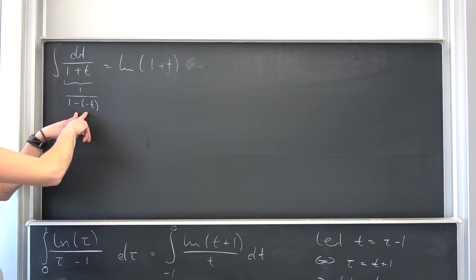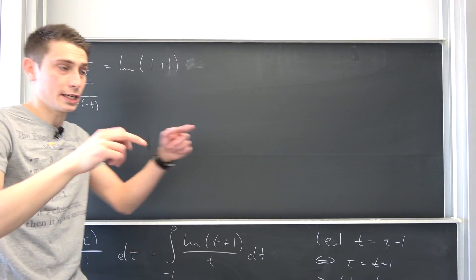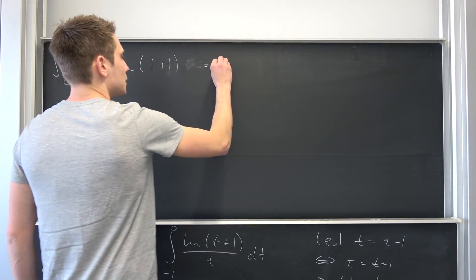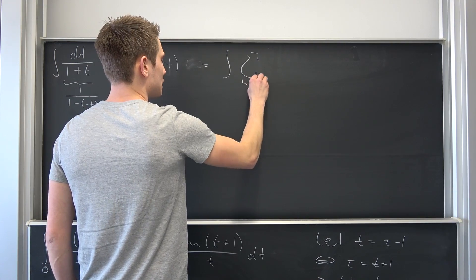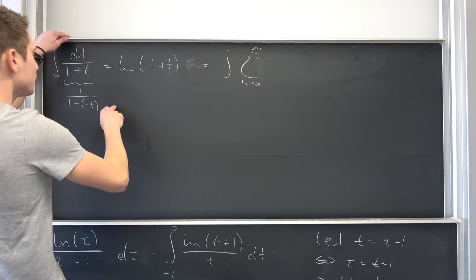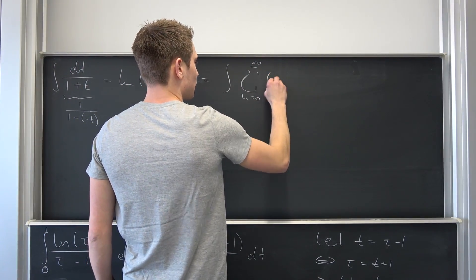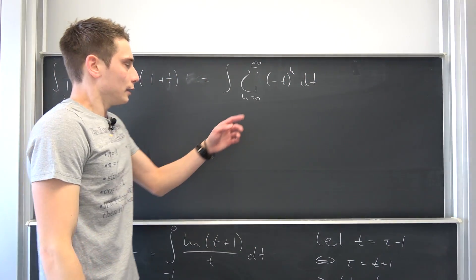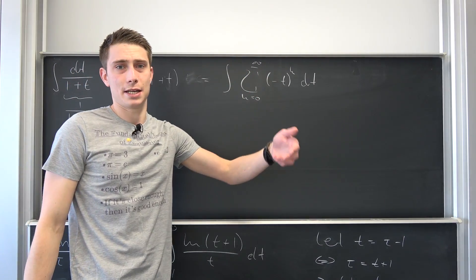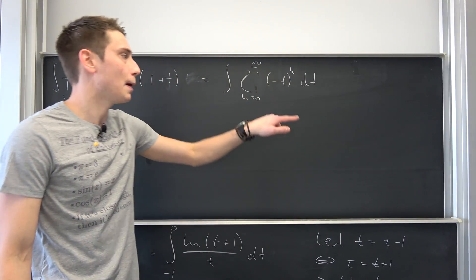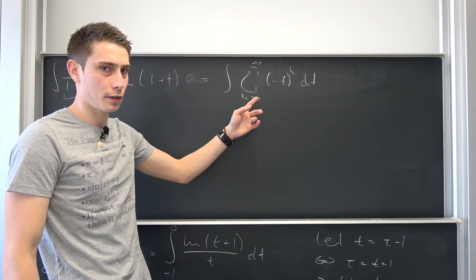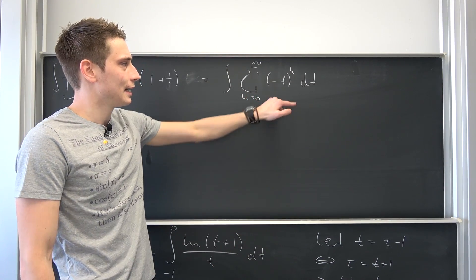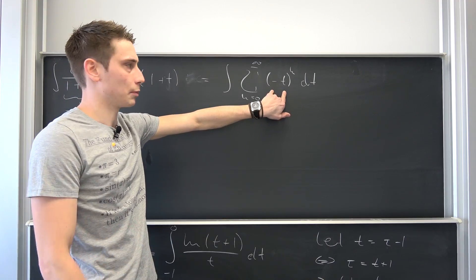So we can express this integrand as nothing but, well, 1 over 1 minus negative t. Okay, and with that out of the way, if our negative t is between negative 1 and 1, we can actually turn this into the geometric series right here. So we are going to get an integral of a sum running from, let's say, k equals 0 to infinity of, well, this is going to give us negative t to the kth power, integrated with respect to t. Now it's a matter of the dominated convergence theorem or Papa Fubini.